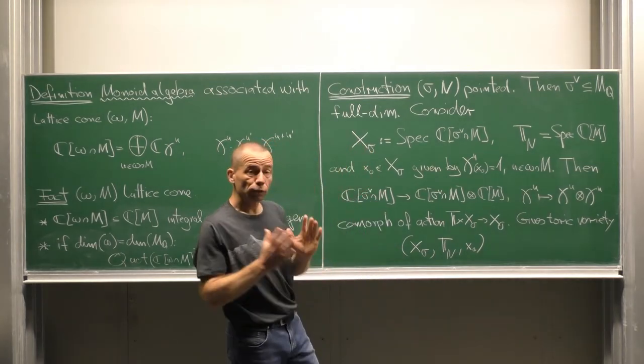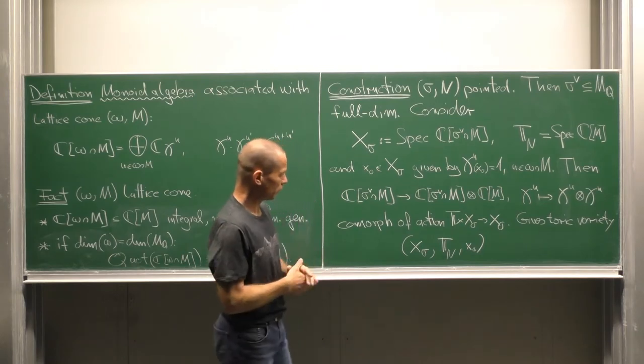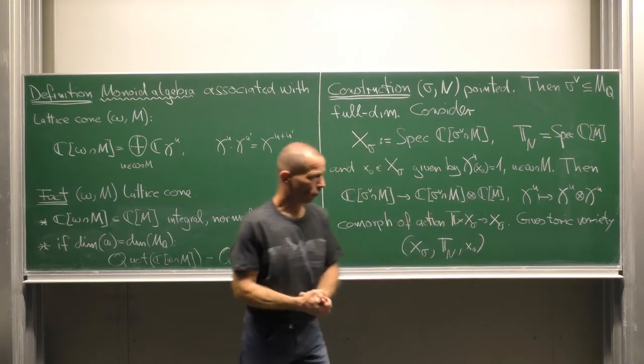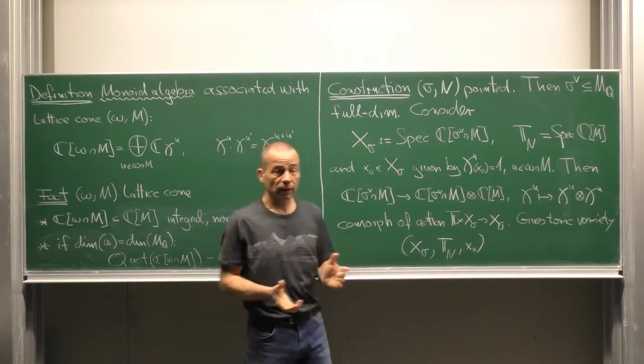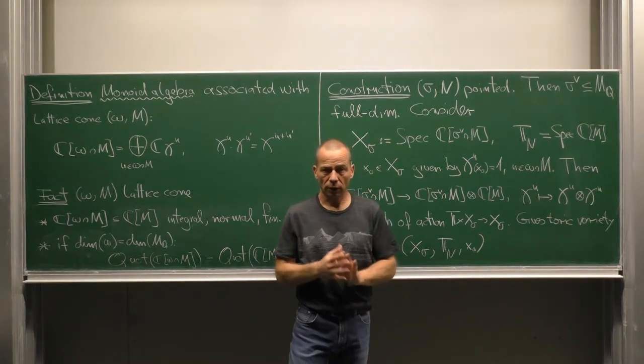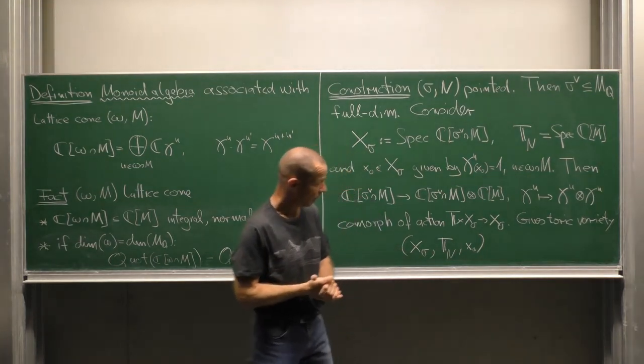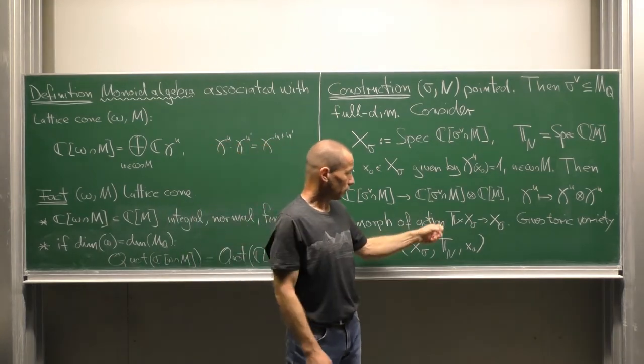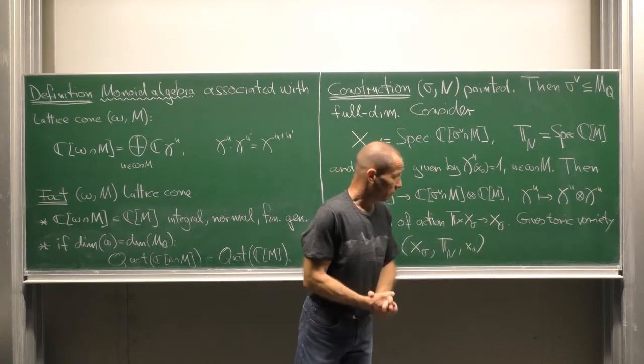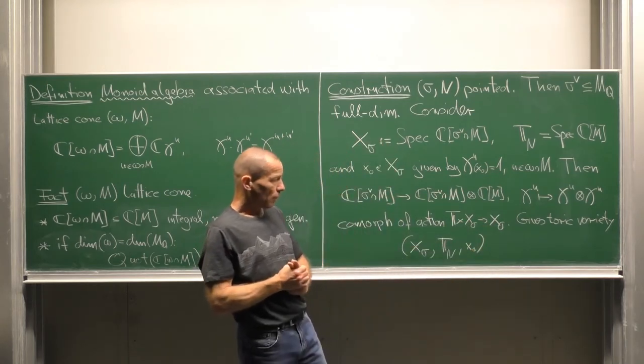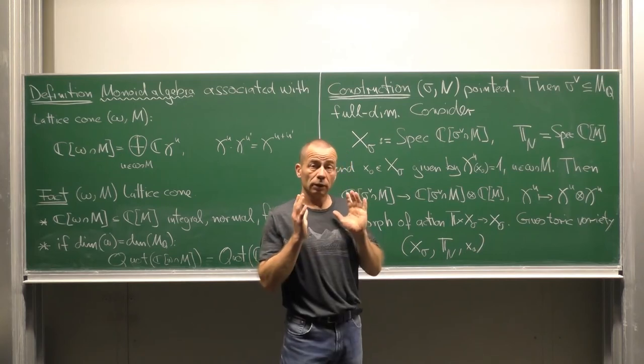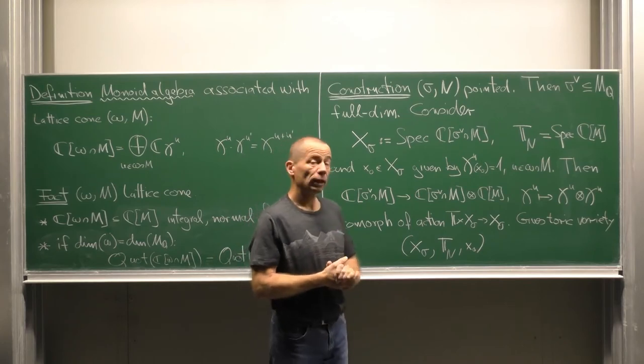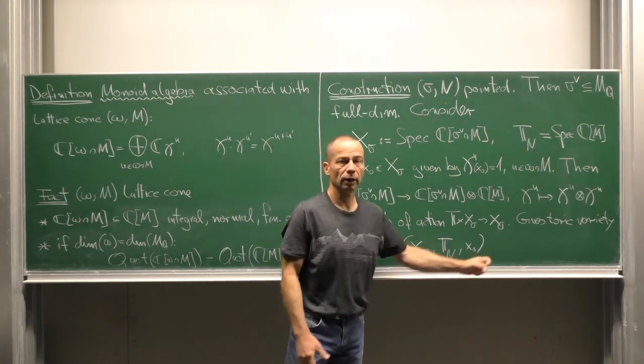Now, in this situation, look at the following homomorphism of algebras. It goes from the monoid algebra to the tensor product monoid algebra tensor Laurent polynomial algebra, sending chi^u to chi^u tensor chi^u. Something similar we have already seen. This turns out to be the co-morphism of an action of the torus T_N on X_sigma. And, indeed, we end up with a torus variety X_sigma, T_N, x_0.